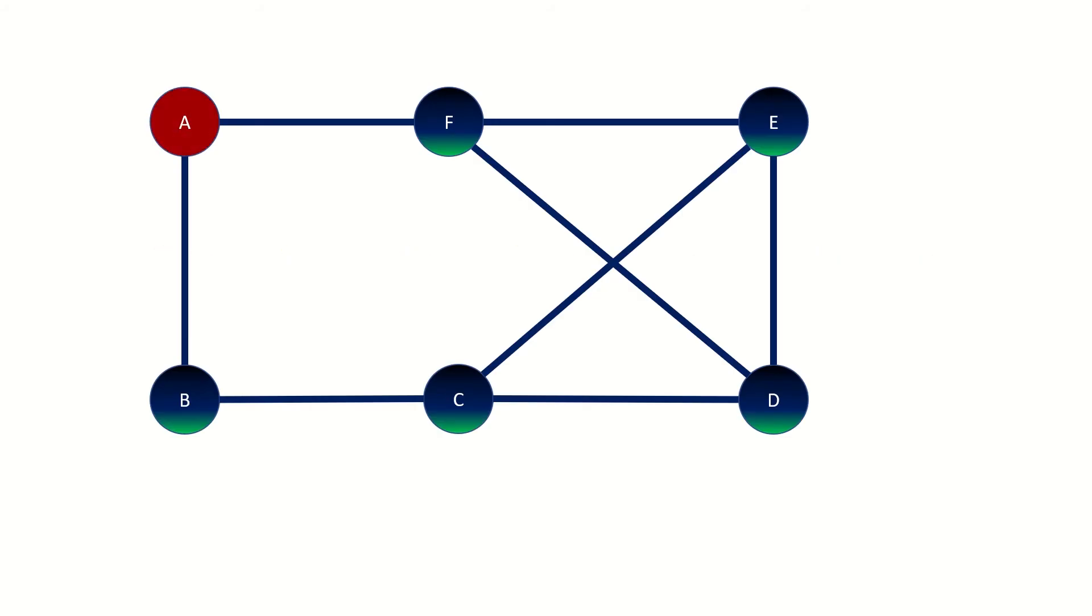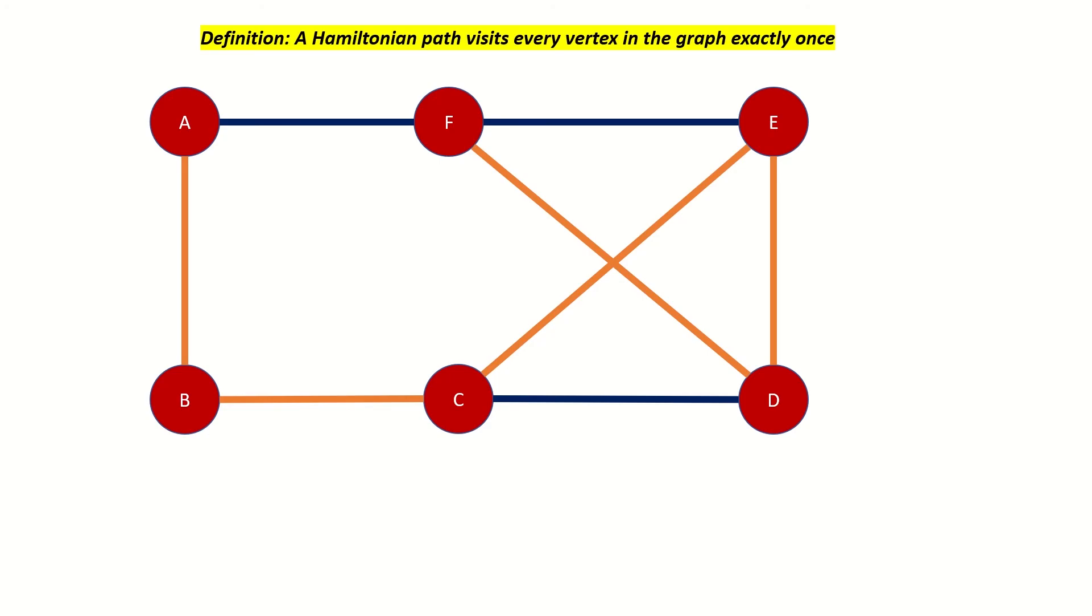Hello Vital Sign! Today we're going to talk about Hamiltonian paths and Hamiltonian cycles. A Hamiltonian path is an open path through a graph that visits every vertex exactly once. If a graph has a Hamiltonian path, we call it a traceable graph.